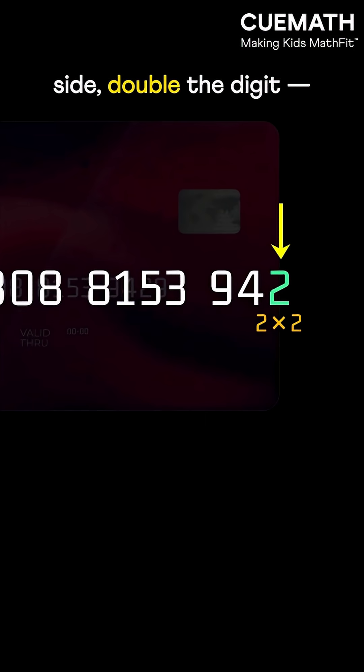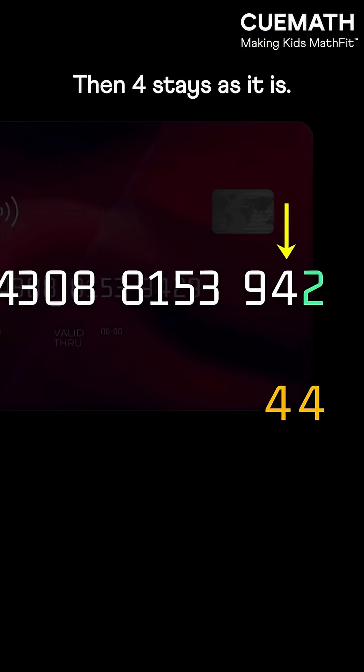From the right side, double the digit. 2 becomes 4. Then 4 stays as it is. Again, double the next. 9 becomes 18. That's two digits, so add them. 1 plus 8 equals 9.